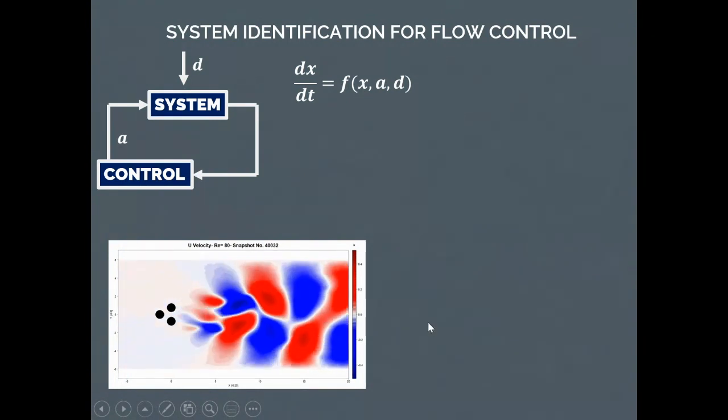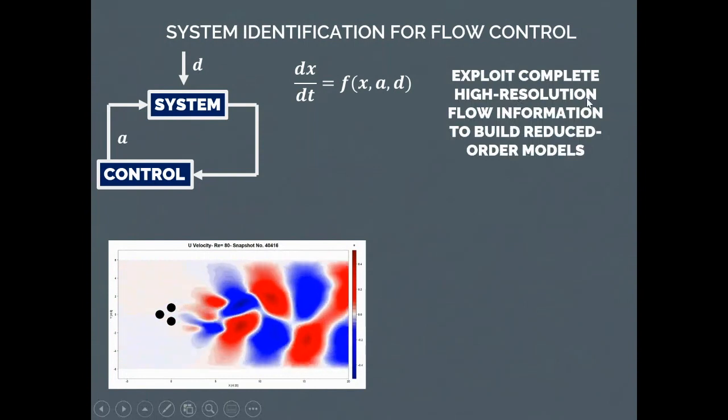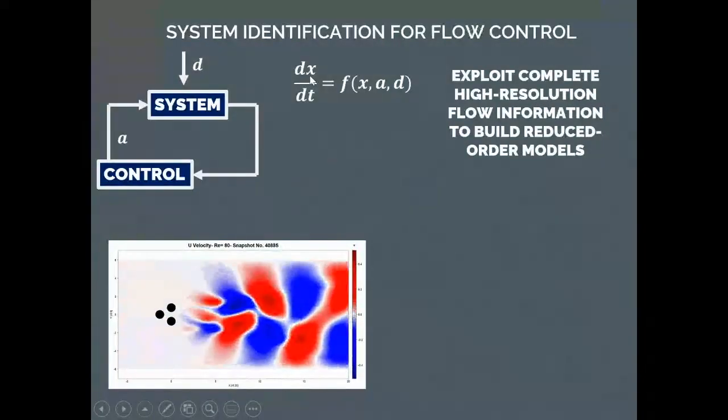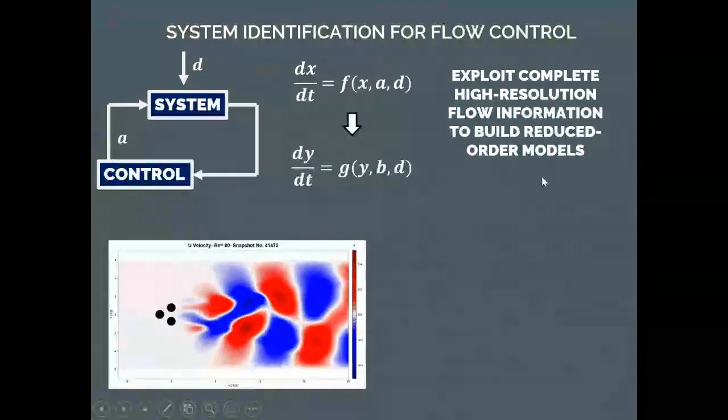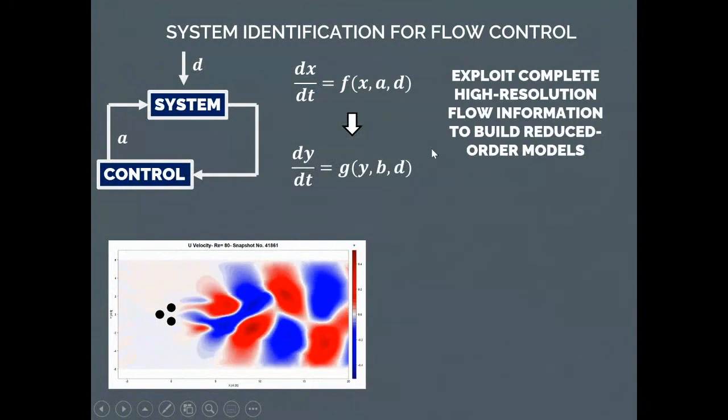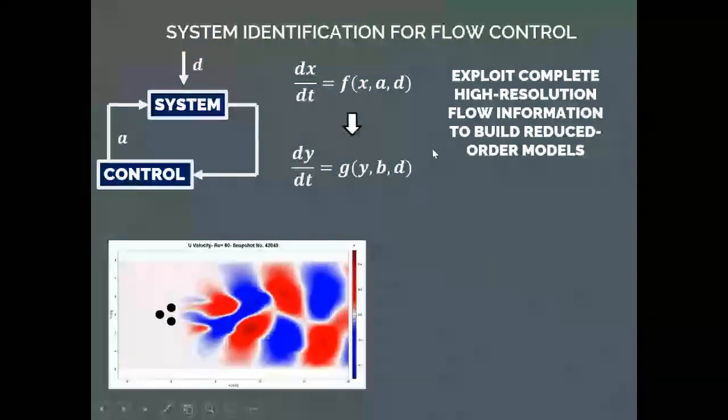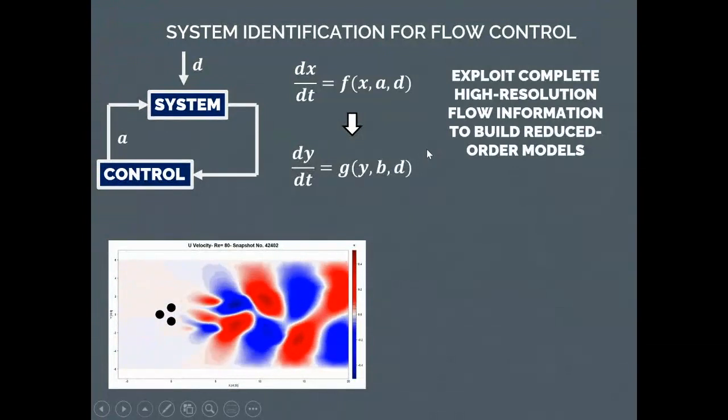Now, if we have the full description of the flow, what we can do is exploit this high resolution information to build reduced order models. This X, the state vector, can be of billions of points, can be the velocity in any points of our grid. But if we reduce our model in a smart way, then we might identify a few coordinates, just a few of them, which control most of the flow, the bulk of the flow. And that's much easier for us to implement in a controller to be used in real time.